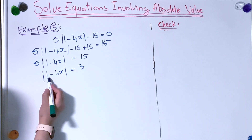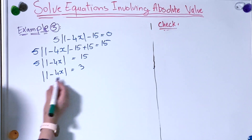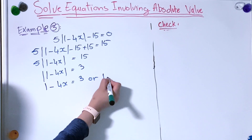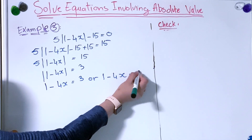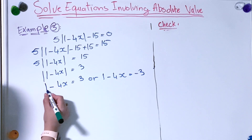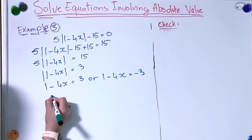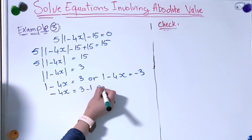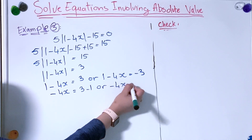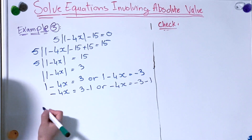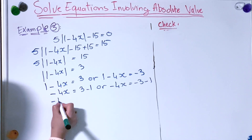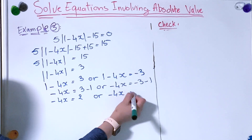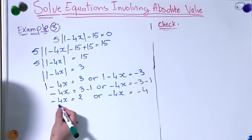So now the absolute value of 1 minus 4x is going to equal either 3 or minus 3. So: 1 minus 4x equals 3, or 1 minus 4x equals minus 3. We subtract 1 from both sides: minus 4x equals 3 minus 1, or minus 4x equals minus 3 minus 1. So minus 4x equals 2, or minus 4x equals minus 4. Now we divide both sides by minus 4.